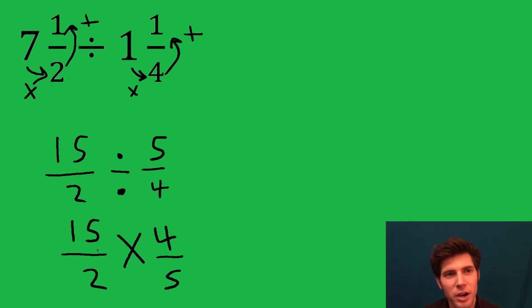Now we multiply across. I'm going to reduce before I multiply across. So this 2 and this 4 can reduce to become a 2 and a 1. And this 15 and this 5, 5 can go into both of them. So this will reduce into a 3 and this will reduce into a 1. Now we can multiply across. 3 times 2 is 6 and 1 times 1 is 1. So the answer is 6.